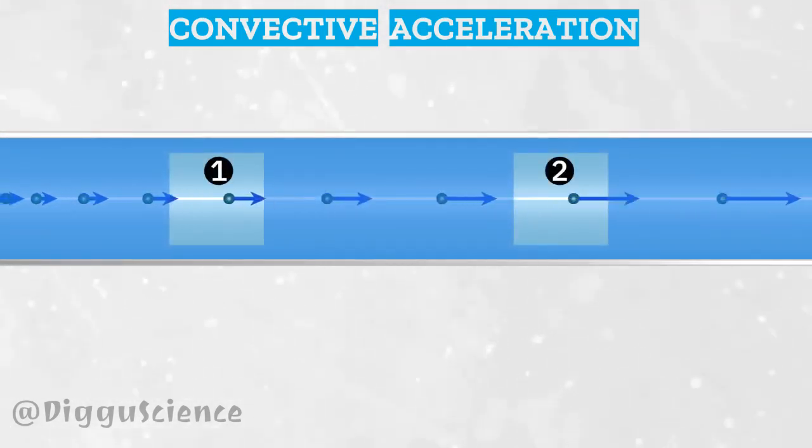Let's just say there are points one and two—this is an Eulerian description. Look carefully: the fluid velocity at point one is the same because the length of the arrow is the same. Likewise, the fluid velocity at point two. This is the principle of steady flow.